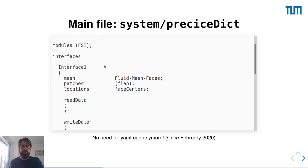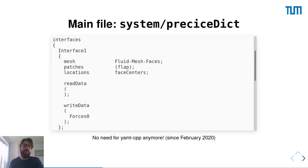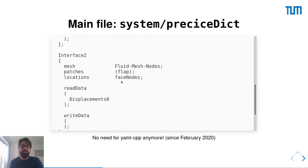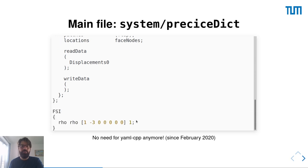We also need to specify the coupling interfaces. Each interface relates a mesh of preCICE to patches and data that we read and write. Here we specify two interfaces: the first is the fluid mesh faces, which relates to the patch 'flap', where we write forces on the center of the faces. The second interface is defined on the face nodes of the flap, where we read displacements. Finally, we provide physics-related values, for example the density, because here we are coupling an incompressible solver.